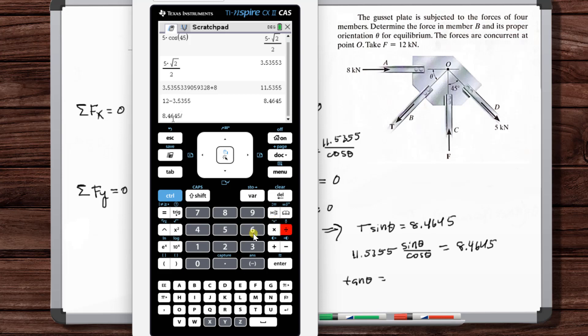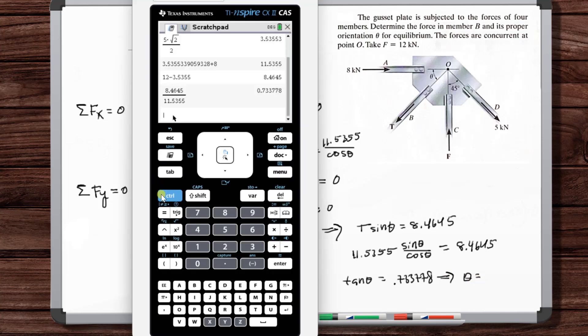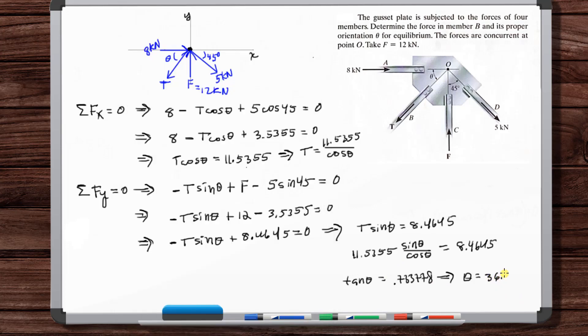So 8.4645 divided by 11.5355 gives us 0.7337, so theta is equal to 36.3 degrees. Okay, and that's one of the answers. That's the proper orientation, this angle theta for equilibrium.